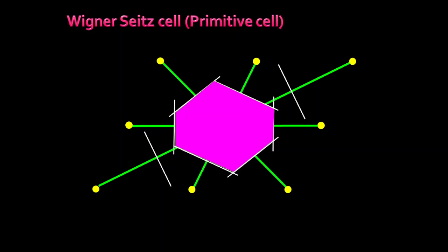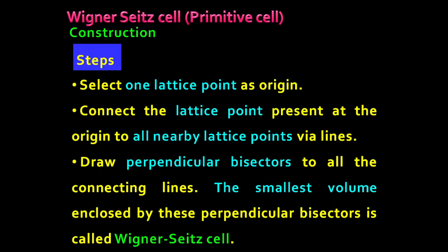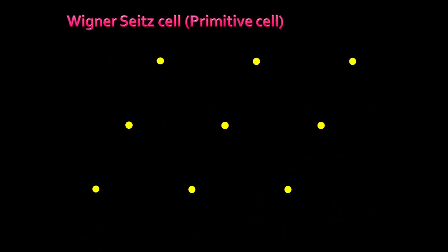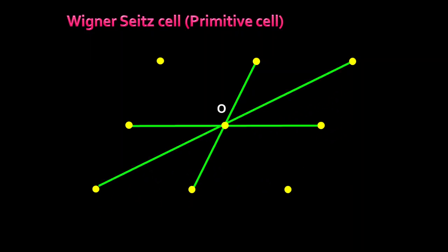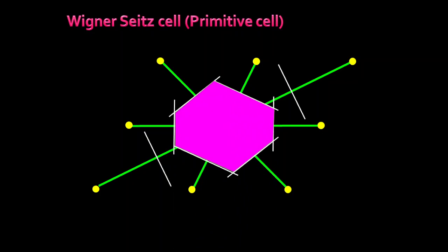Today we have seen what is the Wigner-Seitz cell and how it is constructed. To summarize: consider an array of lattice points, select one lattice point at the origin, draw all connecting lines from the origin to all nearby lattice points, draw a perpendicular bisector to each of those lines, and the area enclosed by these perpendicular bisectors is called the Wigner-Seitz cell. This is the simple procedure to construct the Wigner-Seitz cell.